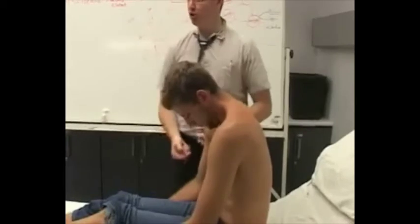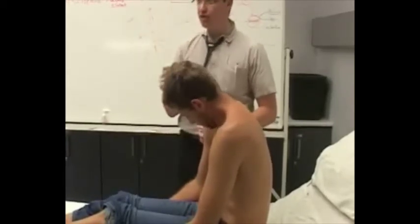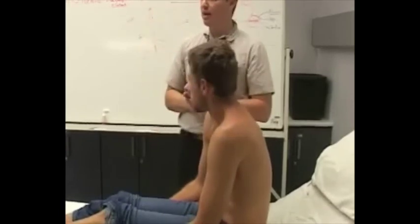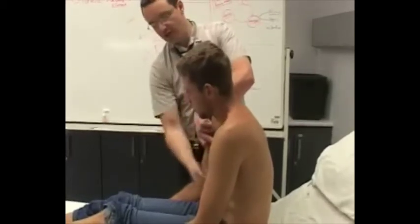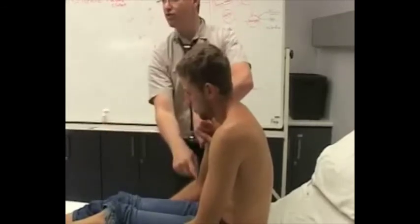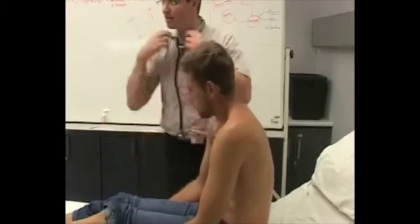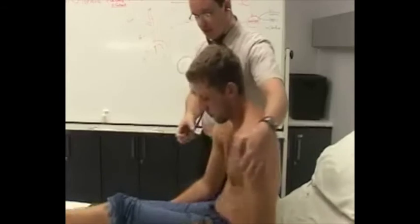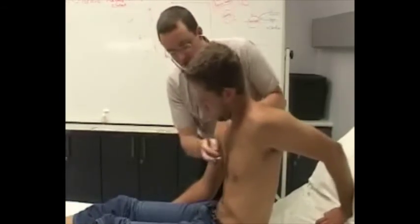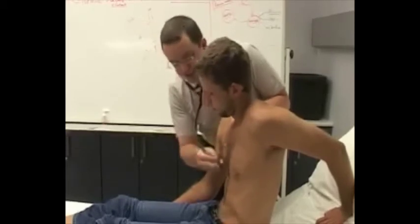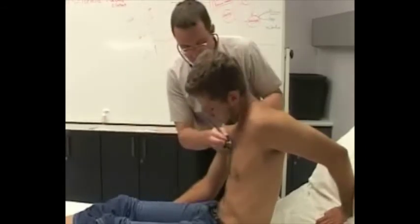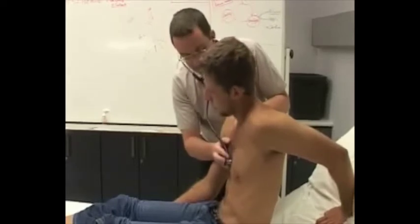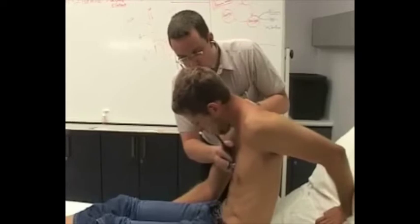The next maneuver targets an aortic incompetence murmur, which is an early diastolic decrescendo murmur — it starts loud and goes soft very quickly. Because the blood falls back from the aorta into the ventricle toward the apex, I put my stethoscope in the left parasternal area to catch that regurgitant sound traveling toward the apex. I ask the patient to take a deep breath, exhale, and hold — bringing the base of the heart closer.